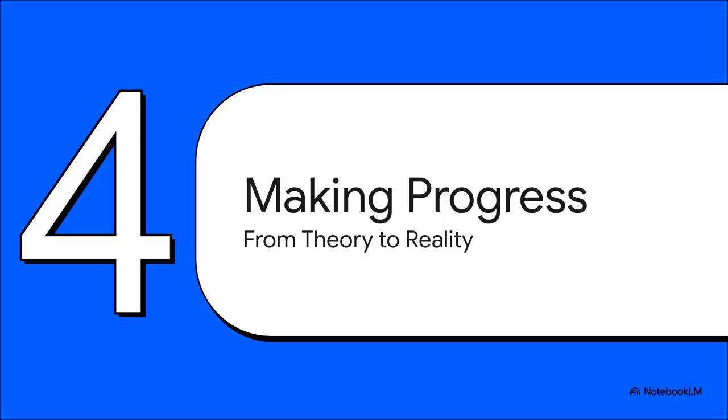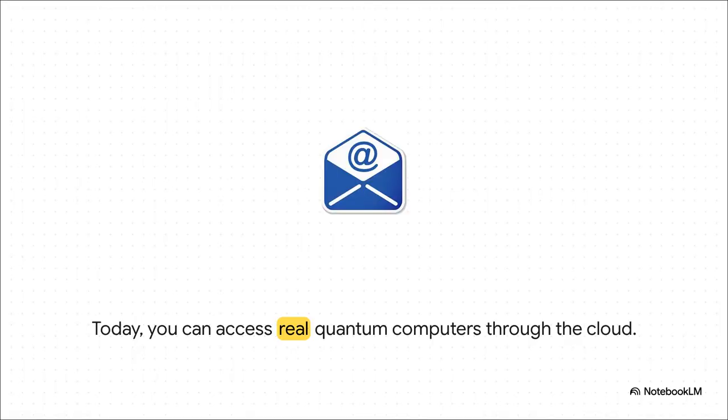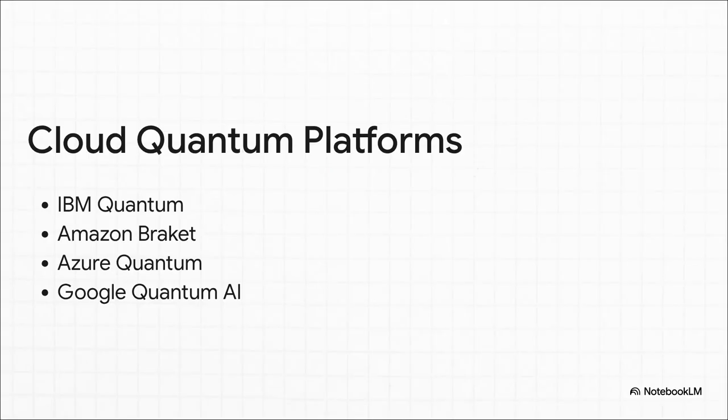But this isn't just some clever workaround. It's a sign of real tangible progress. We are actively learning how to manage, mitigate, and just plain reduce quantum noise, turning these theoretical machines into real usable tools that people can work with. And it has become incredibly real. This is not science fiction happening in some secret lab somewhere. You, right now, can get on the internet and run code on an actual quantum computer. Ever since IBM first put a quantum processor on the cloud back in 2016, access has just completely exploded. All the major players, we're talking IBM, Amazon, Microsoft's Azure, Google.